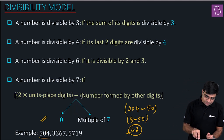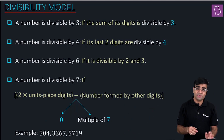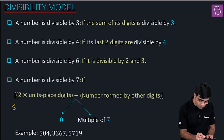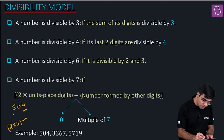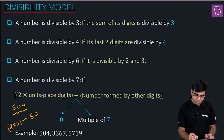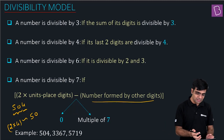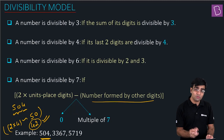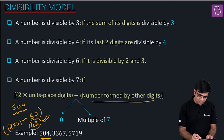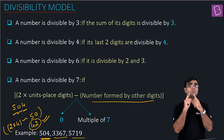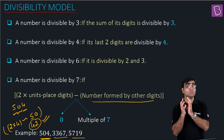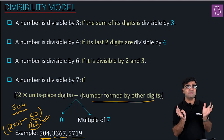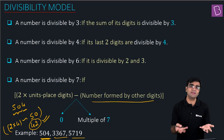Let me repeat it once more. You take the unit digit — for 504, the unit digit is 4. So we take two times the unit digit and take its difference from the number formed by the other digits. The difference of 8 and 50 gives you 42, which is clearly divisible by 7. Hence the number 504 is divisible by 7. You can apply the same trick for other numbers. Two times the unit digit and its difference with the other digits — if this difference is a multiple of 7 or zero, then the number itself is divisible by 7.